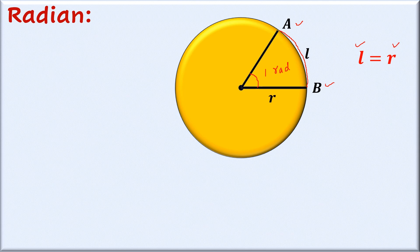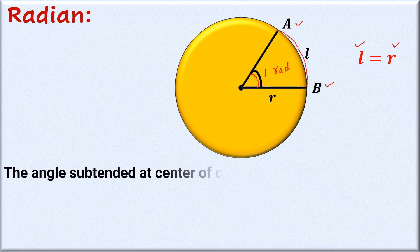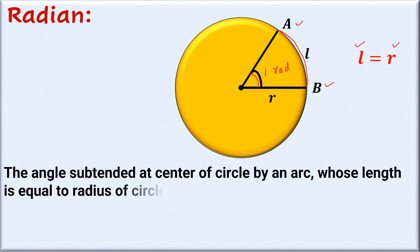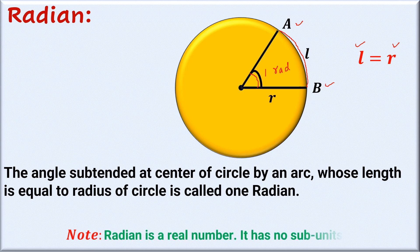We can define the radian as: the angle subtended at the center of a circle by an arc whose length is equal to the radius of the circle is called one radian. Note that radian is a real number.